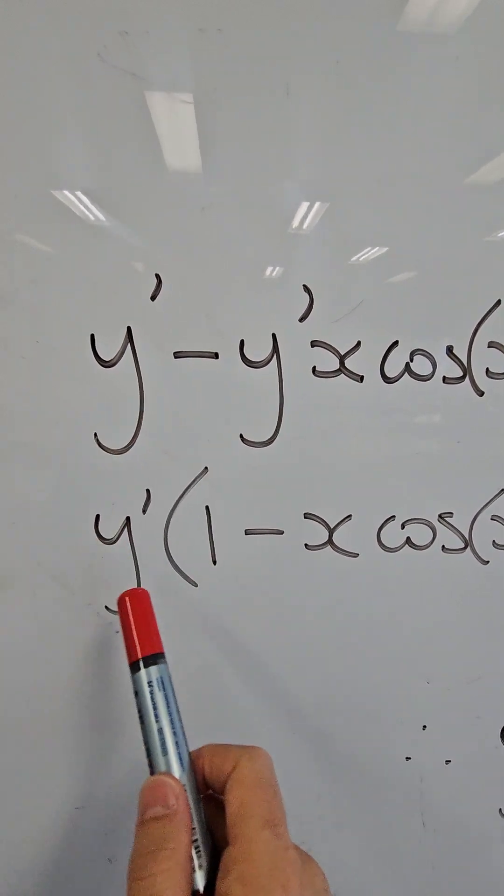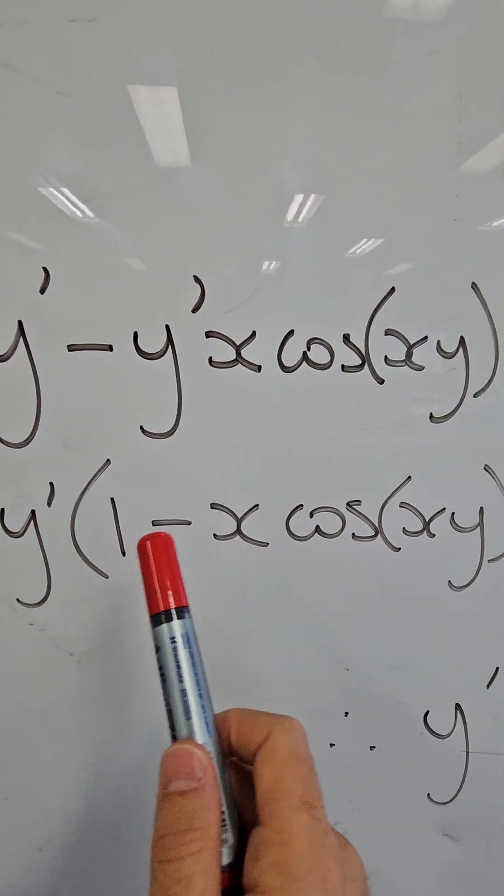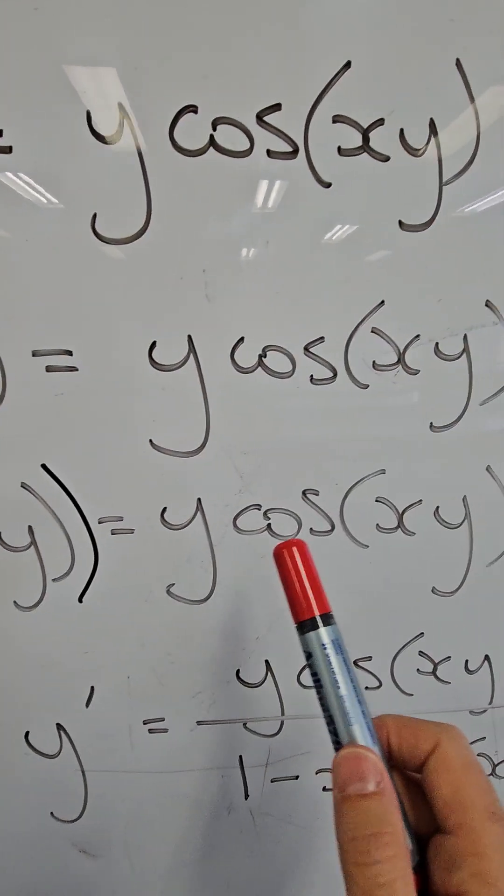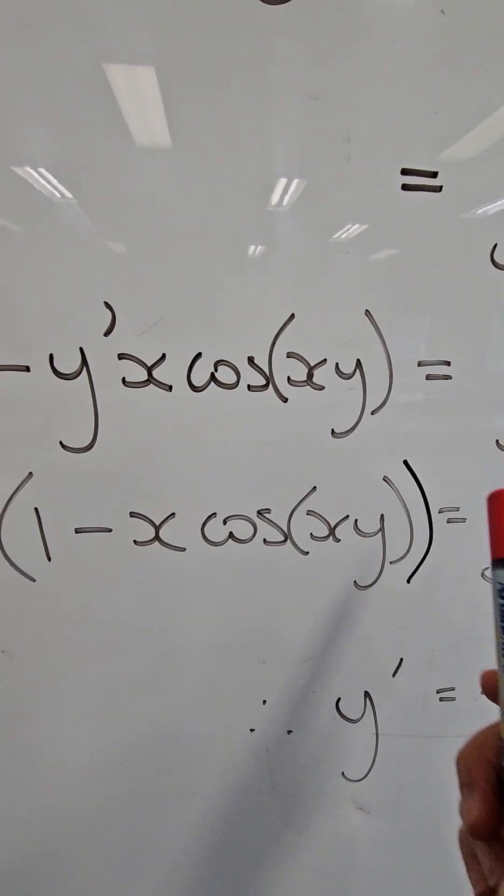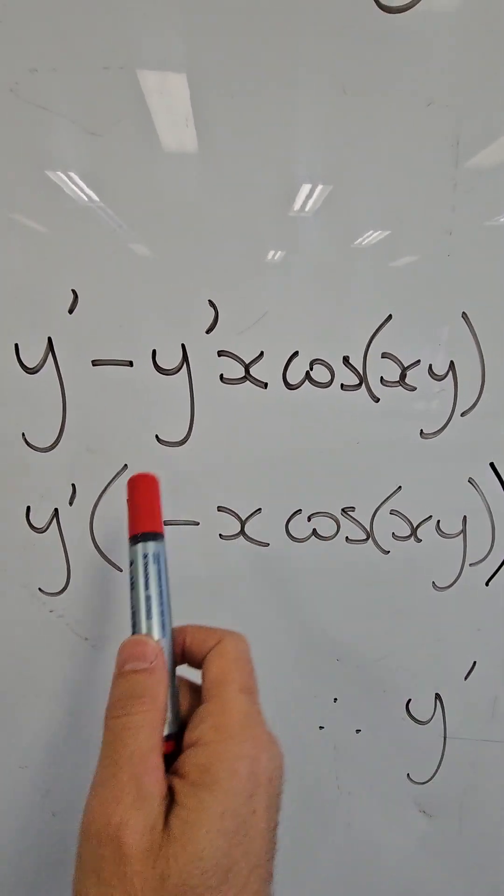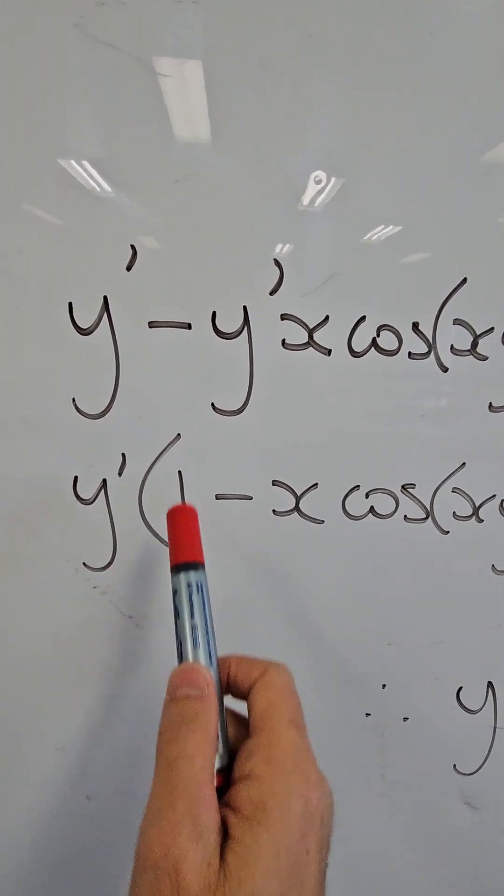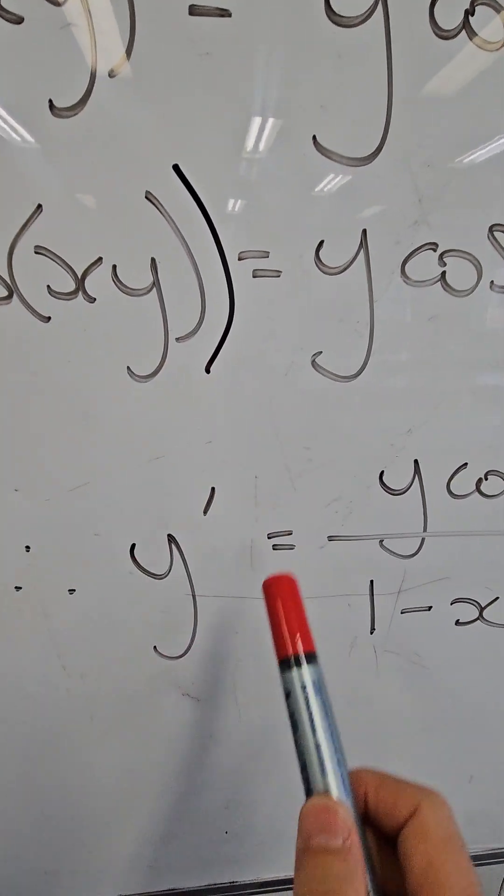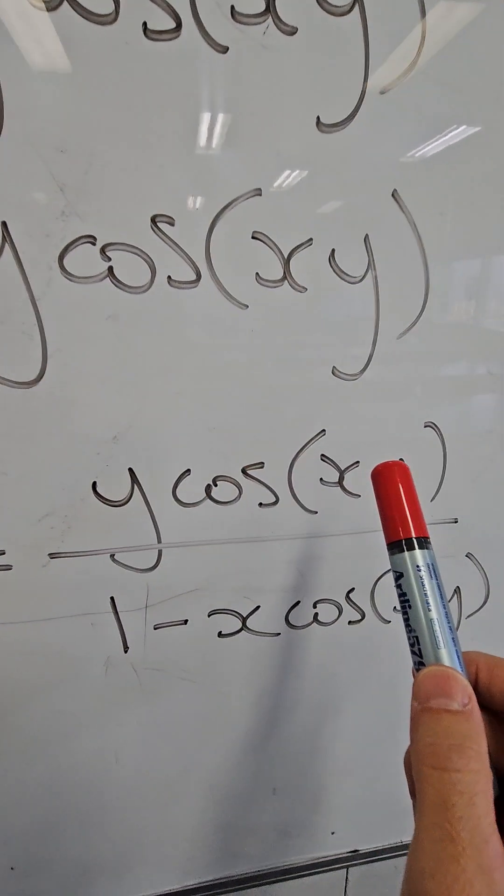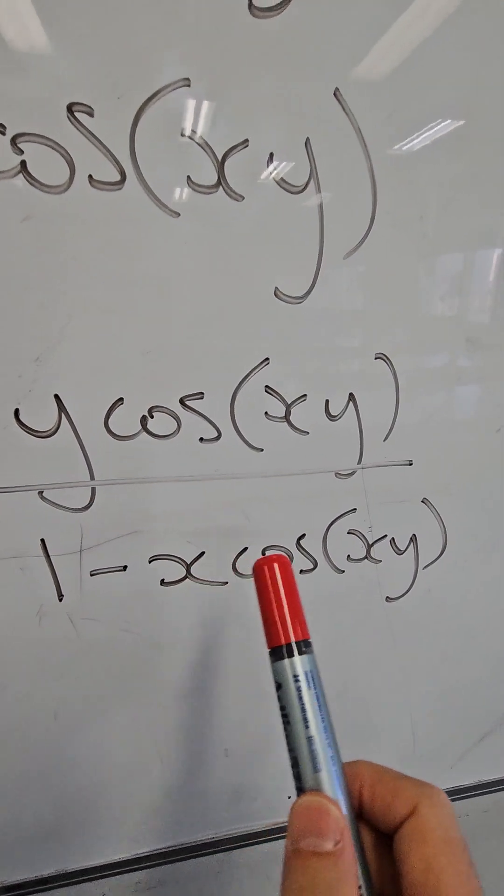Factorizing out y dash on the left hand side we get y dash times 1 minus x cos xy equals y cos xy. Then dividing both sides of the equation by what's in brackets here to make y dash the subject, we get the first derivative y dash equals y cos xy over 1 minus x cos xy.